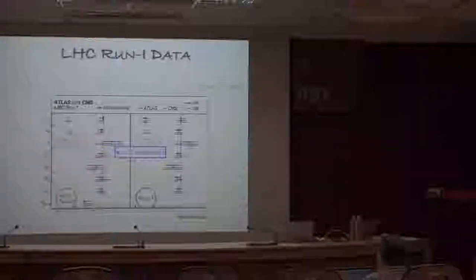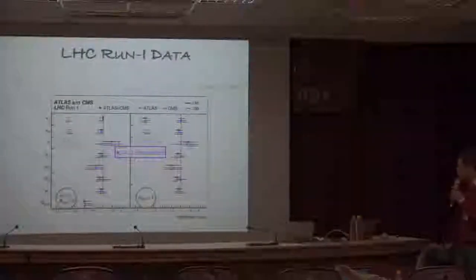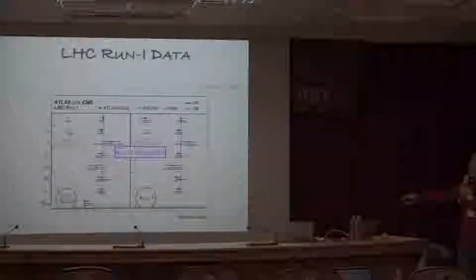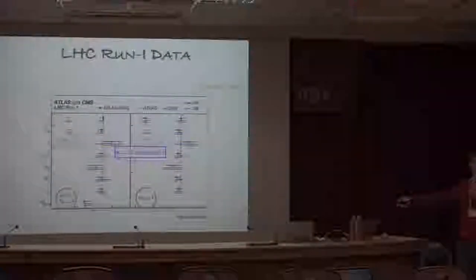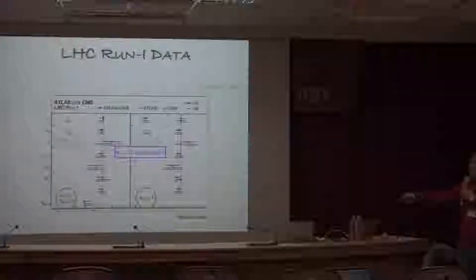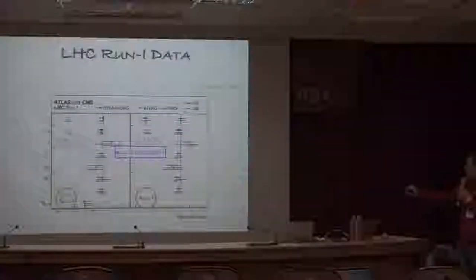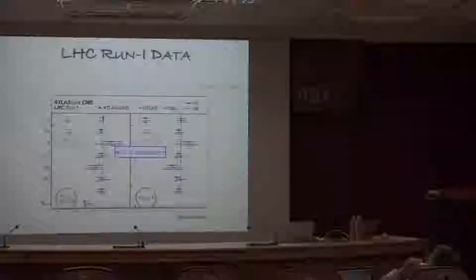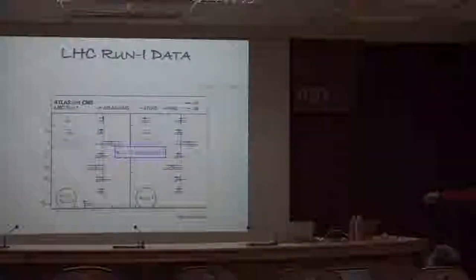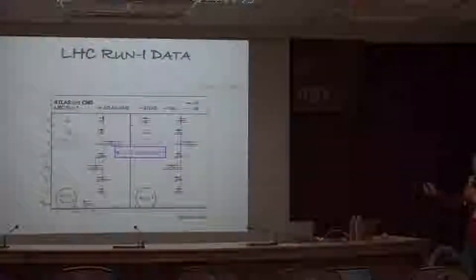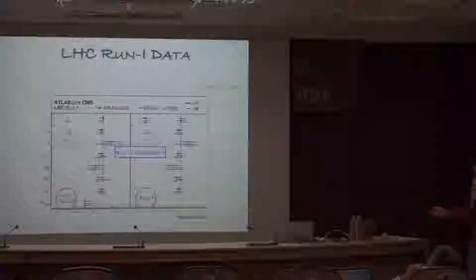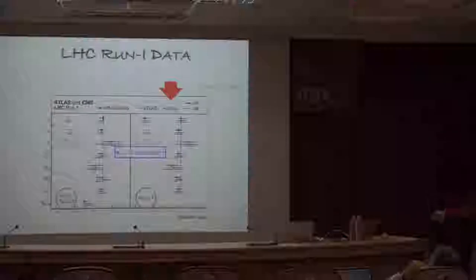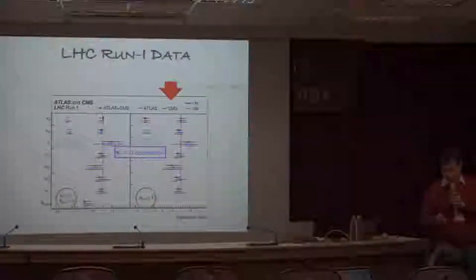On the right-hand side, the only assumption is that the beyond-Standard-Model branching ratio is zero. You can see that for kappa_Z and kappa_W, there is a two-fold ambiguity: in addition to a solution around positive 1, there is also a solution around minus 1. For kappa_T, the convention is that the top coupling kappa is defined to be positive, and for all other fermions the absolute value is taken. In the following, I will concentrate on the right-side scenario with no beyond-Standard-Model Higgs decays.